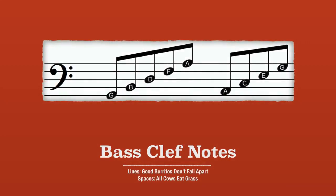When we are using the bass clef, we use the following set of notes. For notes that are on a line, we have G, B, D, F, and A. An easy way to remember this is good burritos don't fall apart. For notes that are in a space, we have A, C, E, and G. An easy way to remember that is all cows eat grass.